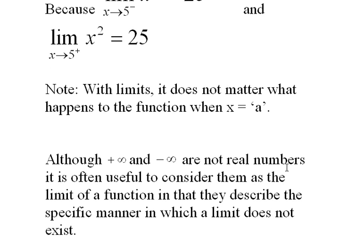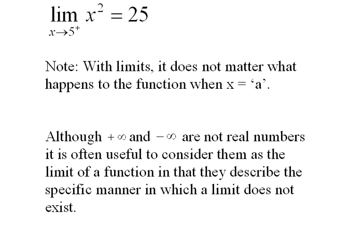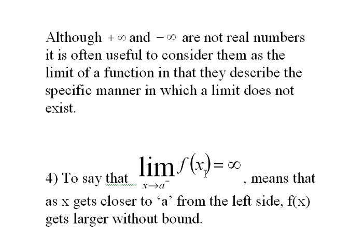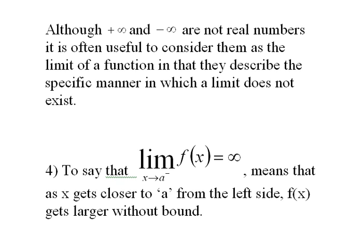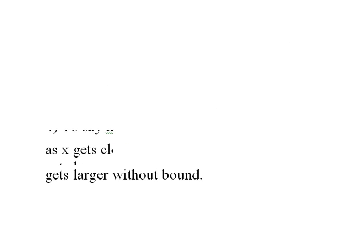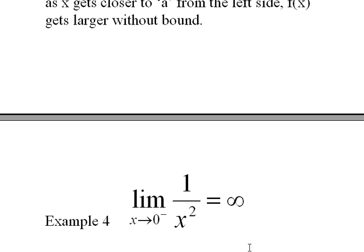Although plus infinity and minus infinity are not real numbers, it is often useful to consider them as a limit of a function, as they describe the specific manner in which a limit does not exist. To say that the limit of f of x as x approaches a from the left equals infinity means that as x gets closer to a from the left side, the function gets larger without bound — in other words, bigger and bigger. For example, the limit of 1 over x squared as x approaches 0 from the left: the function is not defined at 0, but grows without bound.